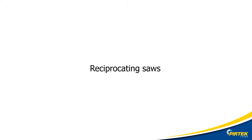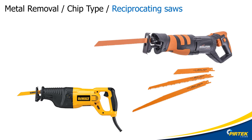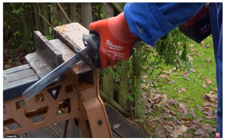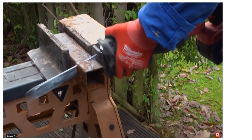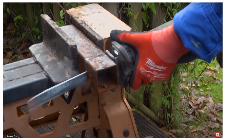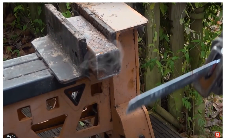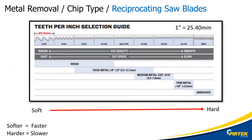The reciprocating saw is a close relative of the power hacksaw but in a portable version. These can be either electric mains-powered, battery-powered, or pneumatic. In the video, the reciprocating saw was fitted with a metal cutting blade. Here is an example of a blade selection chart for a reciprocating saw, showing the different teeth per inch or teeth per 25mm recommendations for different materials. If there is speed control, the softer the material the faster, the harder the slower.